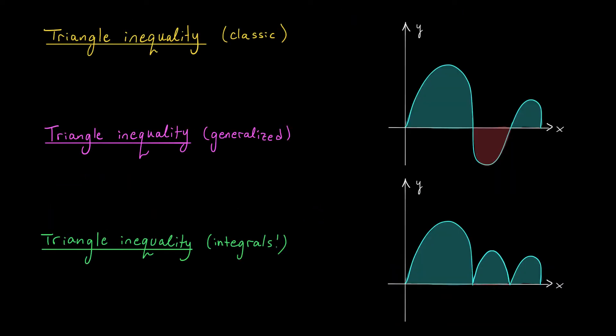In order to estimate the absolute value of the error term, we're going to need something called the triangle inequality. Now, I know what you're thinking. Oh, come on. I know what the triangle inequality is. It's that result that says that the absolute value of a plus b is less than or equal to the absolute value of a plus the absolute value of b. Yeah, that's correct. That's the triangle inequality classic, the most basic version of the result.